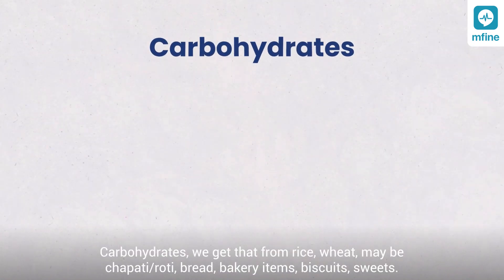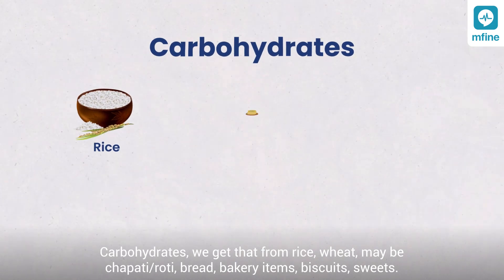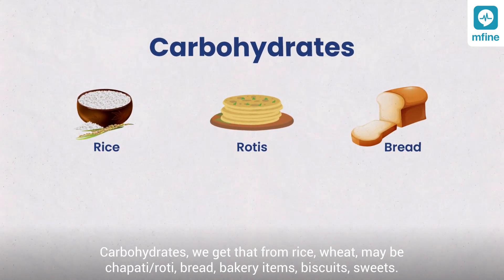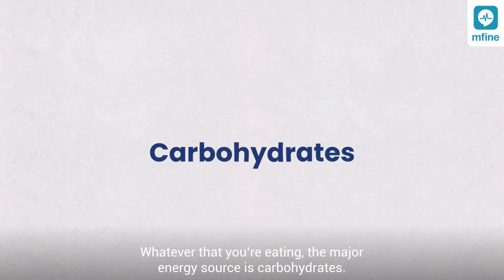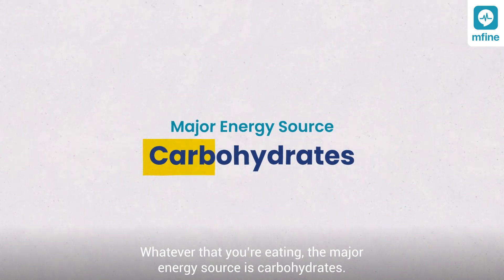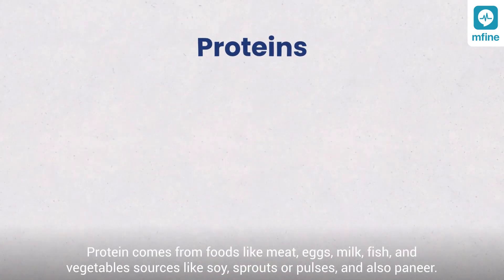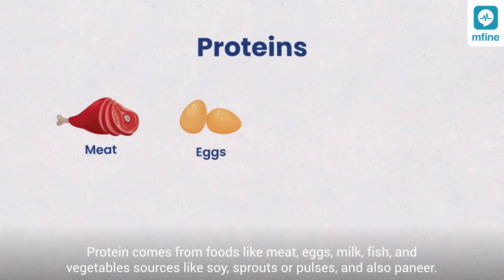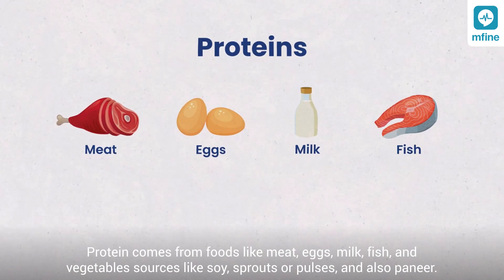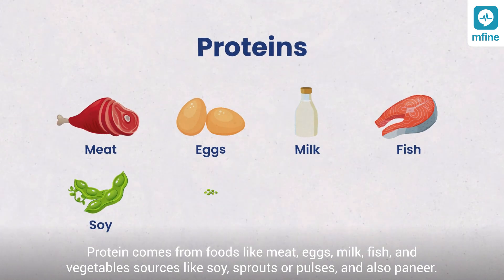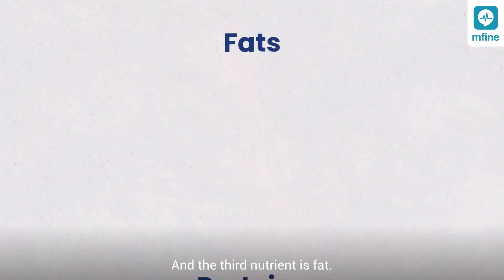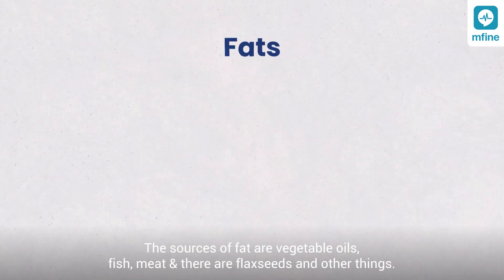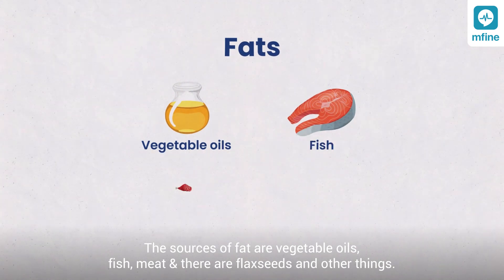So, what are the sources for these carbohydrates, proteins, and fats? Carbohydrates, we get from rice, wheat, chapati, roti, bread, bakery items, biscuits, sweets — whatever you are eating, the major energy source is carbohydrate. Protein comes from foods like meat, eggs, milk, fish, and vegetable sources like soy, sprouts, pulses, and also paneer. The third nutrient is fat — the sources of fat are vegetable oils, fish, meat, flax seeds, and other things.